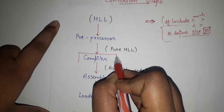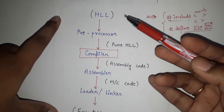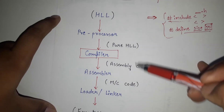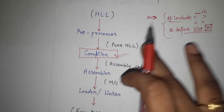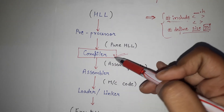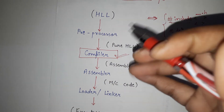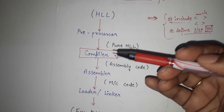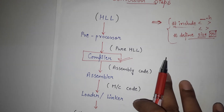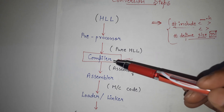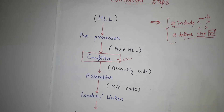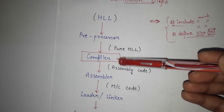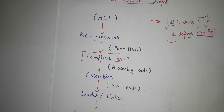Basically, in the subject of compiler design, we are mainly concerned about the compiler itself. This whole phase converts high-level language into low-level or executable code, but among all these steps, we are most interested in the compiler. I will be making next videos covering all the steps — how the compiler exactly works, what it does, and the different phases in which it works. Before going into the compiler, you should understand all the steps involved in converting high-level language into low-level language. Thank you so much.